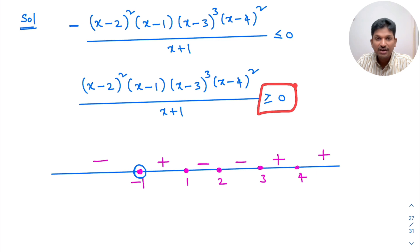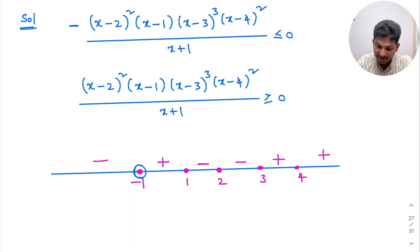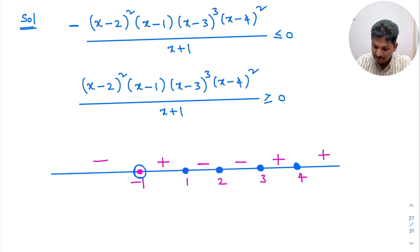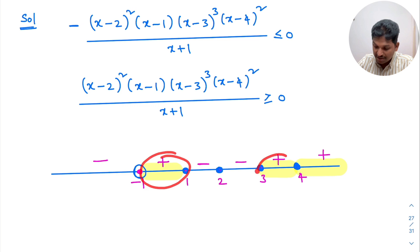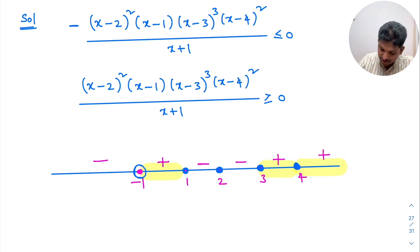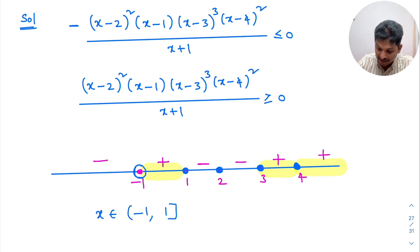We need to look for greater than or equal to 0, meaning positive sign. With ≥, the critical points 1, 2, 3, 4 (marked as dark circles) are included. Looking for positive regions: the solution is x belongs to the open interval (-1, 1] union the closed interval [3, ∞).